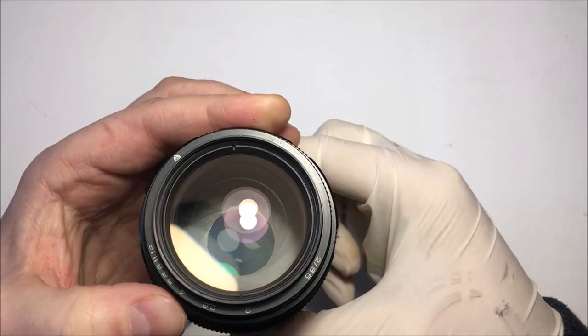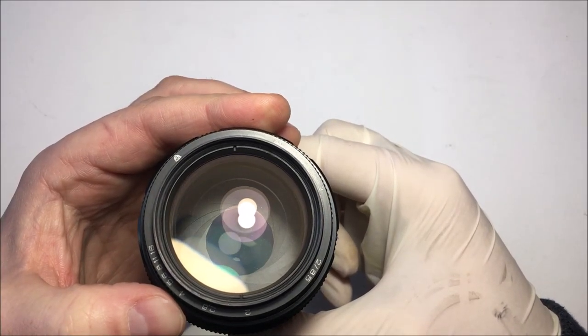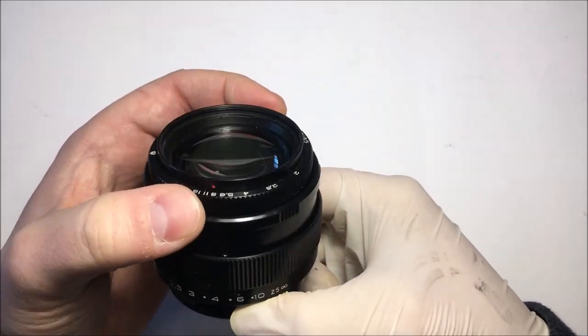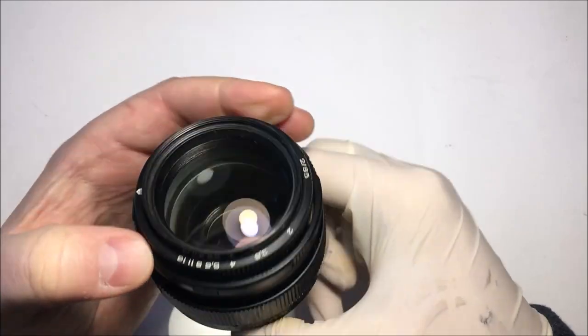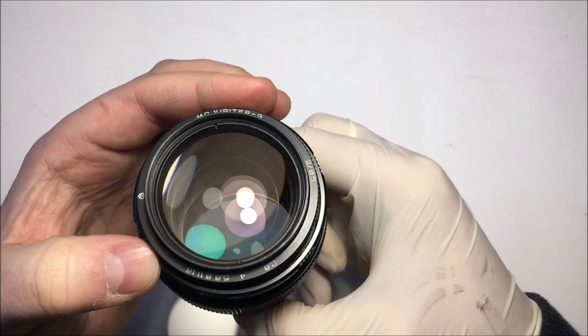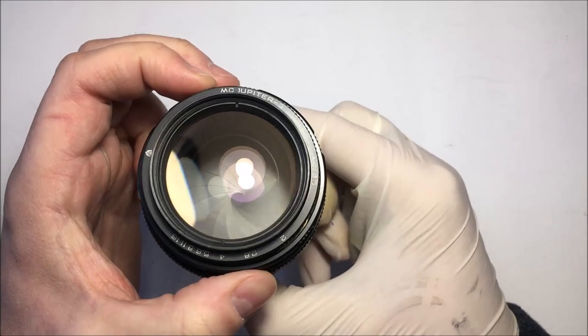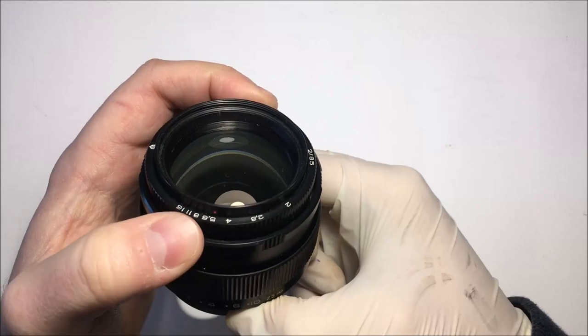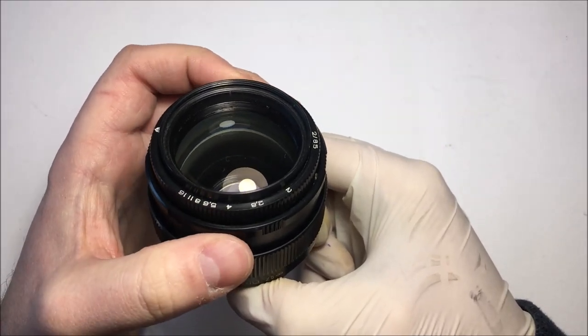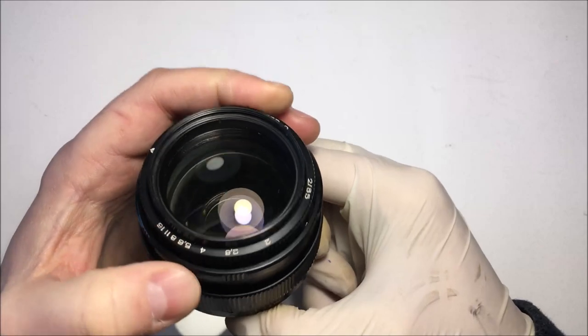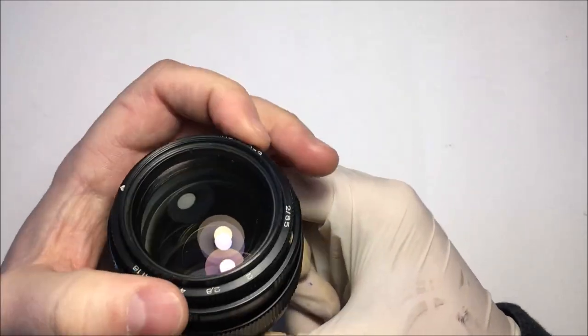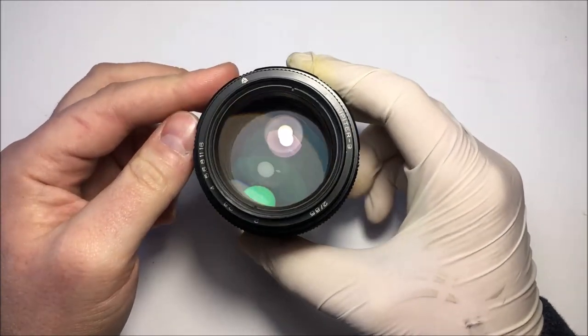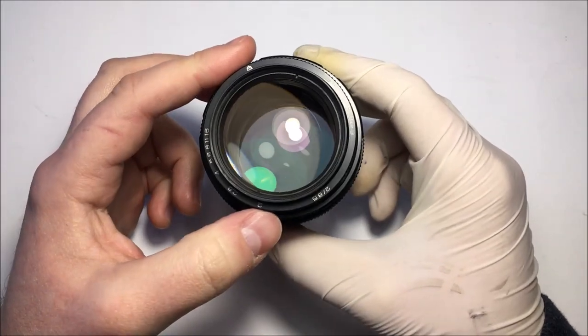And the same thing for 8, for example. Here you have your 8, you focus at wide open, so you turn the ring, you have your 8 value. 5, 5.6, the same thing. So it's really a useful feature, especially when you shoot film or just DSLR cameras.